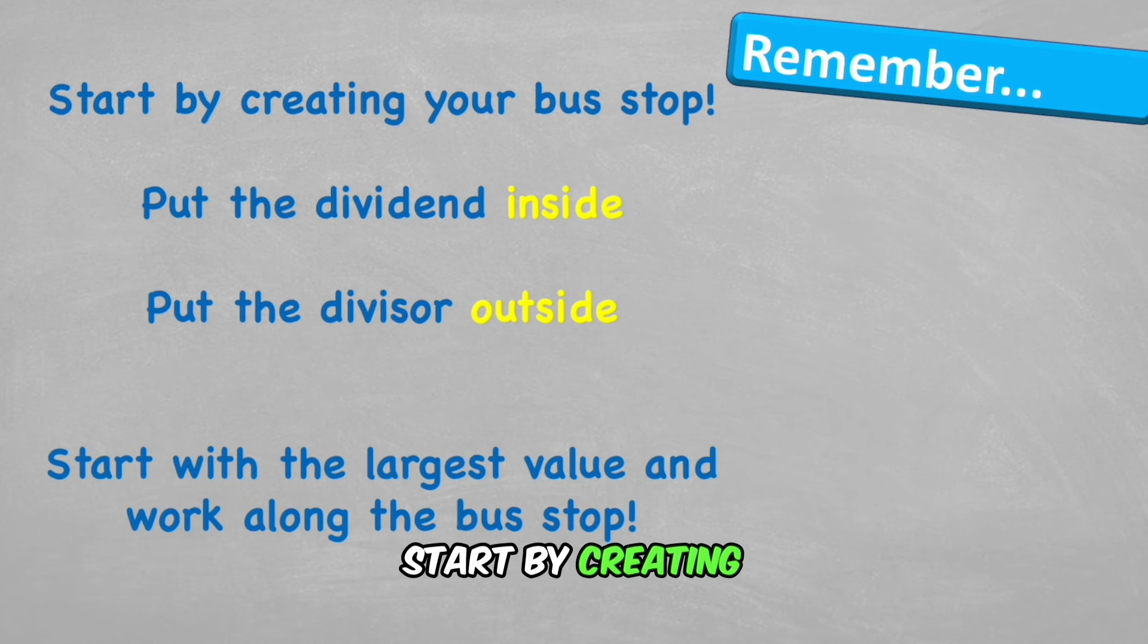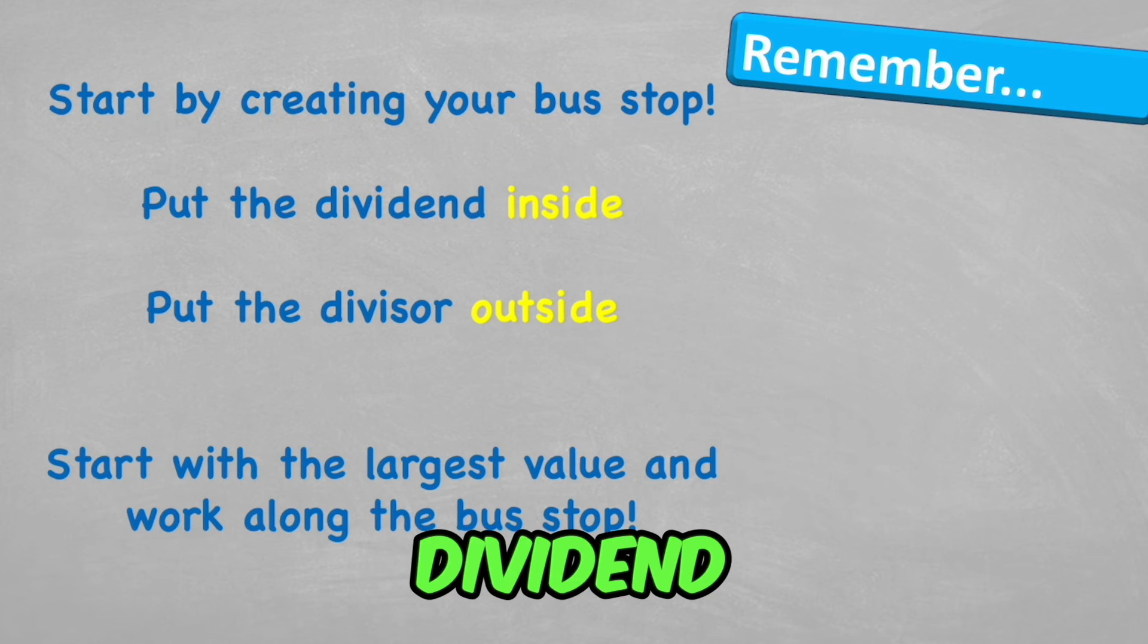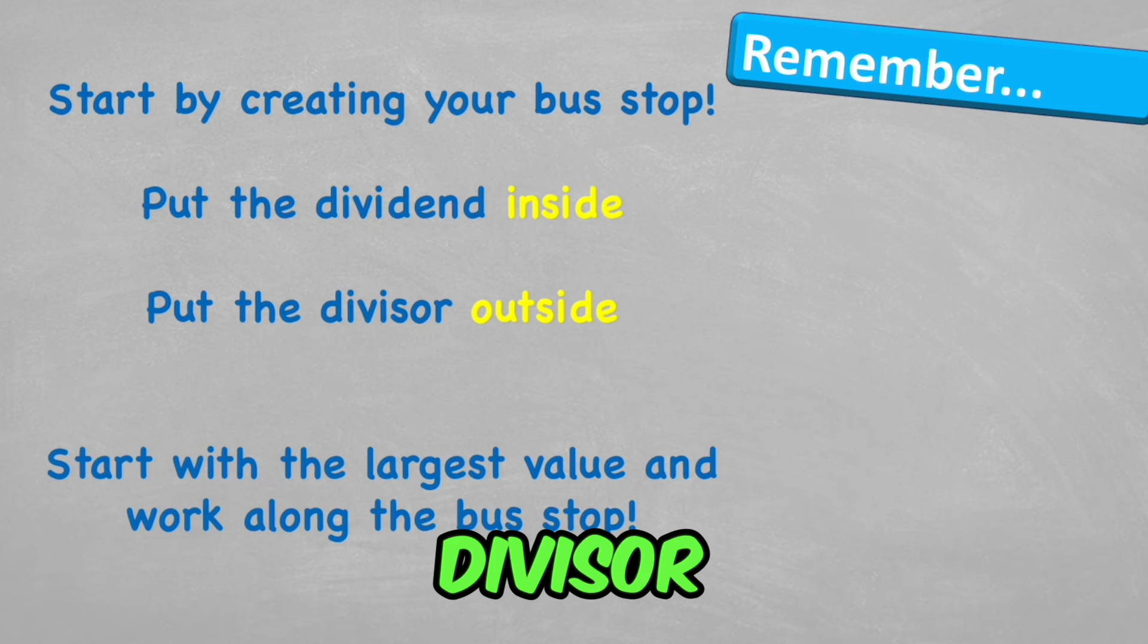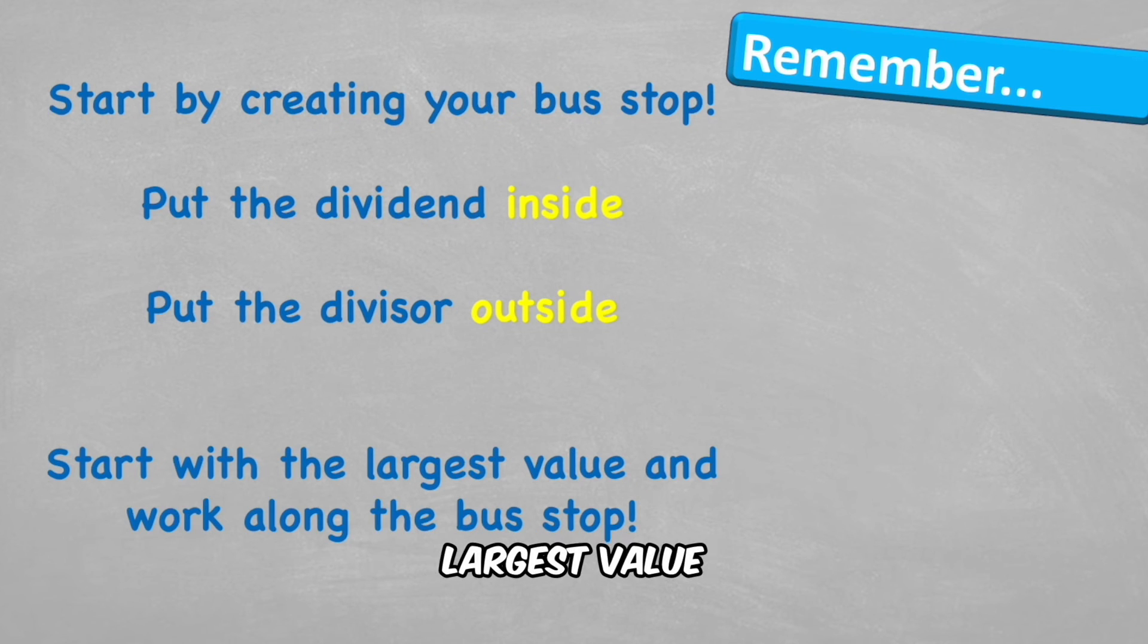Let's look at what to remember. Start by creating your bus stop and put the dividend inside and put the divisor outside. Start with the largest value and then just simply work along your bus stop. If you have any remainders at the end, all you have to do is put remainder and then whatever you've got left over.